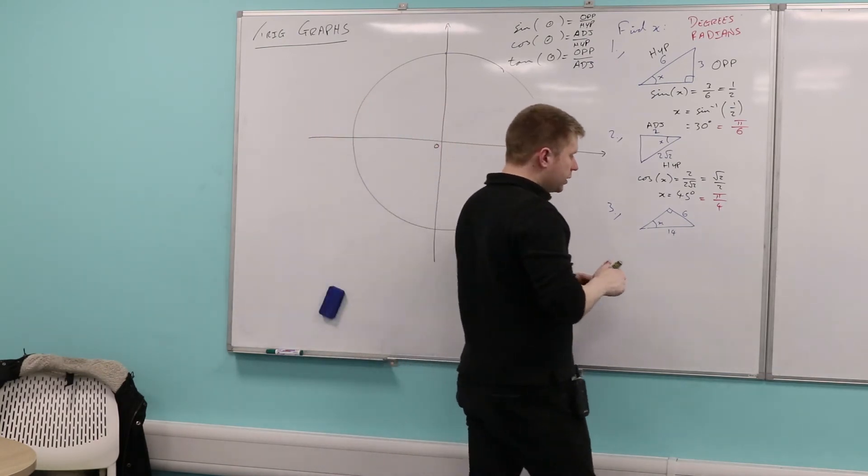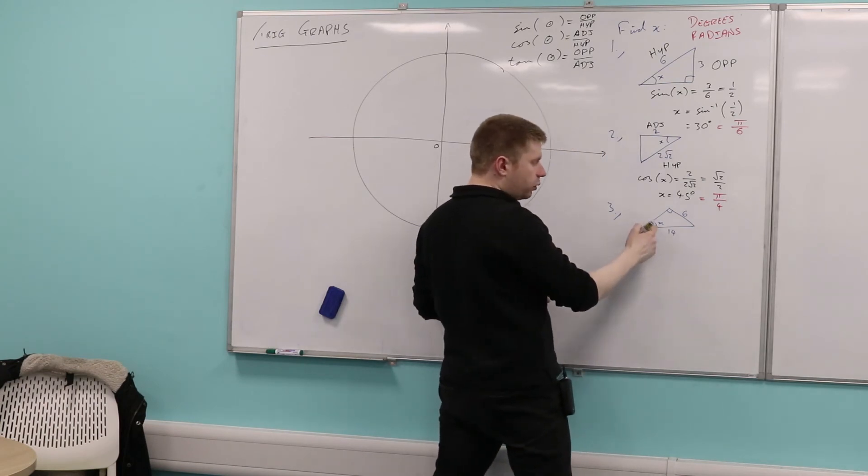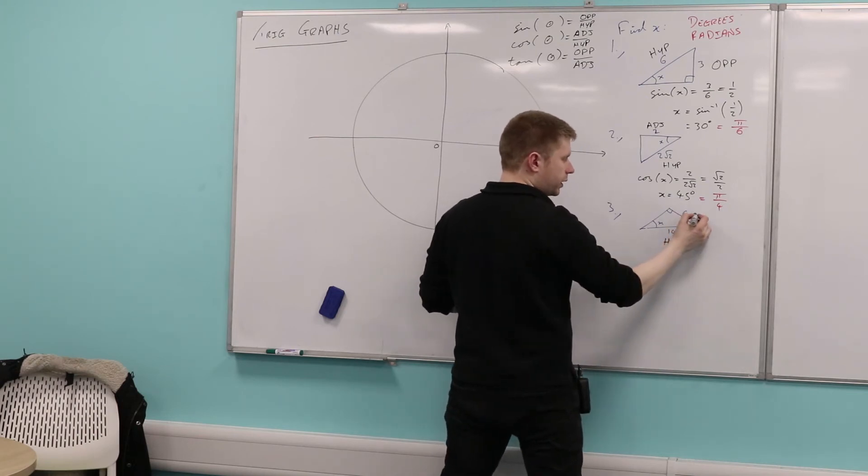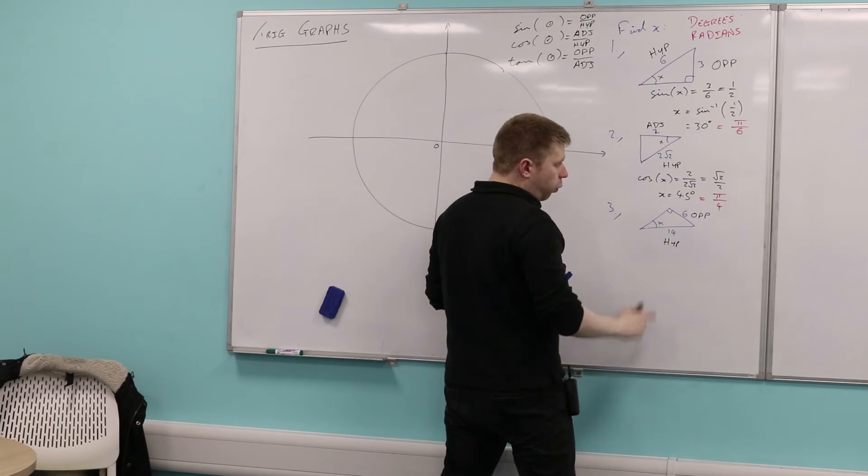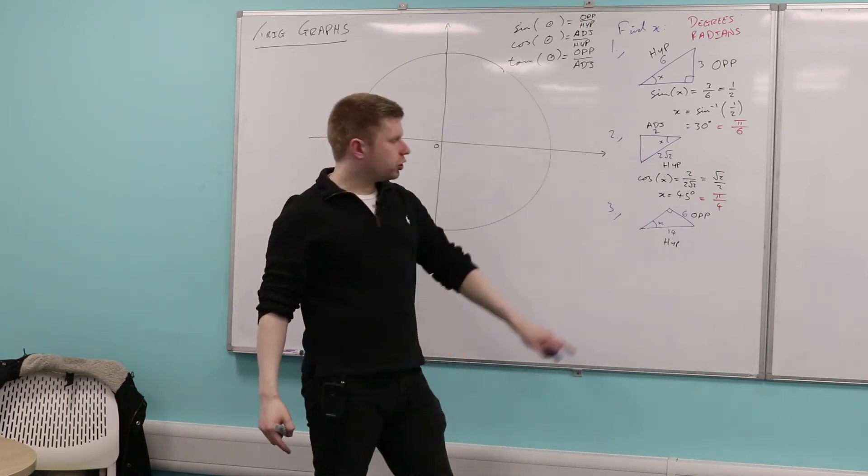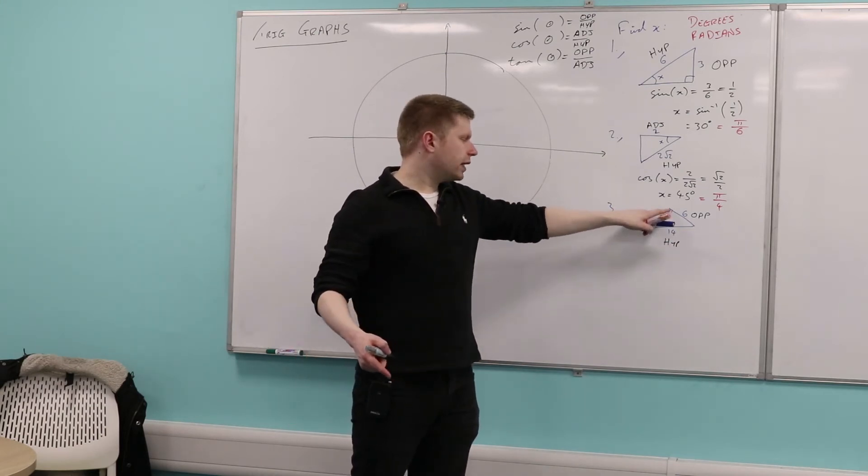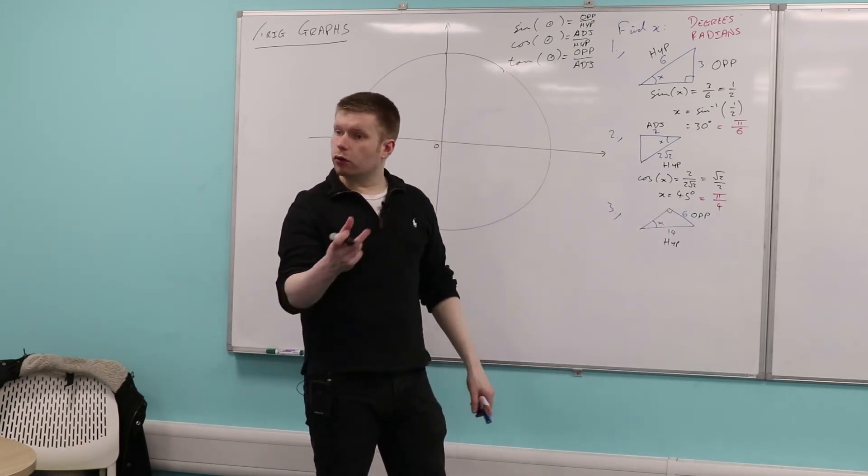Last one then. So let's label up our sides. This is my angle. What's this side? It's the hypotenuse. Absolutely. The hypotenuse. What's this side? Opposite. Why is that side not the adjacent? Because you say, well, hang on, that is next to the angle. Why is it not the adjacent? Why is the hypotenuse? It's facing the right angle. Perfect. It's facing the right angle, so it's got to be the hypotenuse, the longest side. Good.